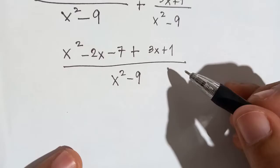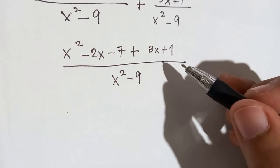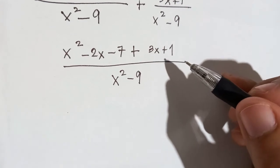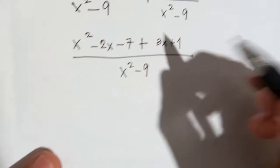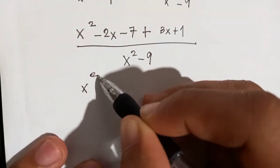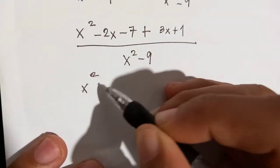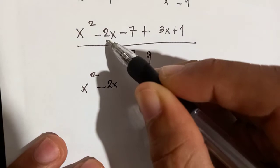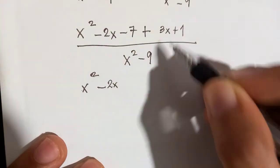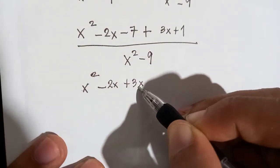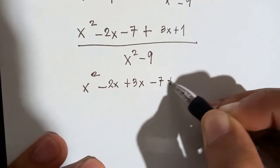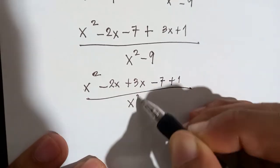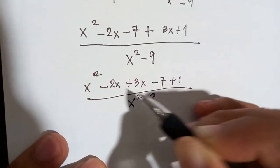Then arrange these so we can properly add. Combine like terms in the numerator. So: x squared, then 2x together with 3x, then minus 7 plus 1, all over x squared minus 9.